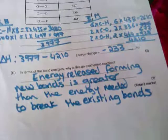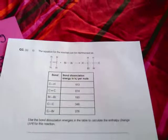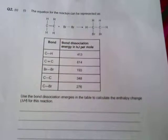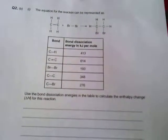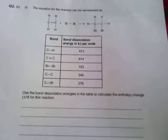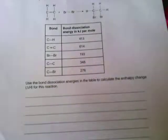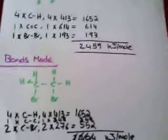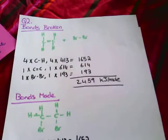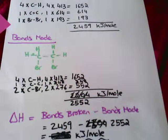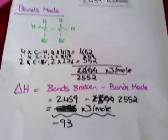Right, I'm going to give you another question to look at. Question two. The equation for the reaction can be represented as shown. Use the bond-associated energy to calculate the enthalpy change, delta H, for this reaction. It's the same kind of process as previous. So if you have a look, I've just written out my method a bit bigger here. Bonds made. And we should get a minus 93 for our delta H.